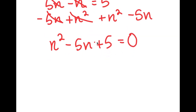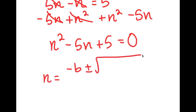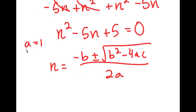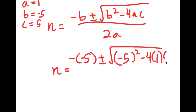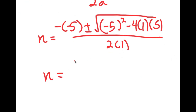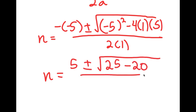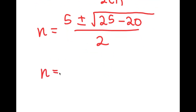From here, to solve this, I can use the quadratic formula, which is negative b plus or minus the square root of b squared minus 4ac, all over 2a. In this case, a is 1, b is negative 5, and c is positive 5. So I get n is equal to negative of negative 5 plus or minus the square root of negative 5 squared minus 4 times 1 times 5, all over 2 times 1. This equals positive 5 plus or minus the square root of 25 minus 20, all over 2.